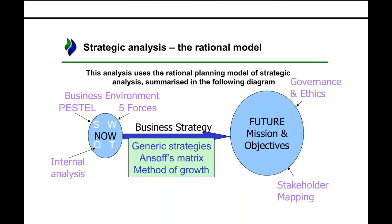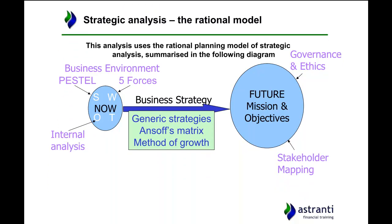We're going to use an overarching model called the rational model. This takes a look at where we want to be in the future, where ADF are now, and how they are going to get there. In the future, we'll look at mission, objectives, governance, ethics, and stakeholders. In the present, we'll look at five forces, PESTLE, and internal analysis of strengths and weaknesses. Finally, we'll look at how to get from A to B using Porter's generic strategies, the SAF matrix, and general methods of growth.